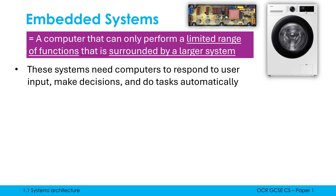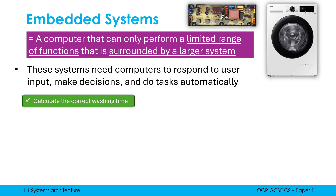Some systems don't need any processing. For example, a light switch doesn't need processing, and a kettle doesn't need processing. A washing machine is complex enough that adding a computer would be helpful.